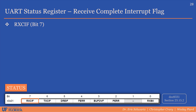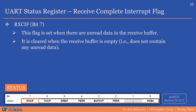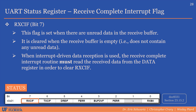Each XMega UART module is capable of generating three different interrupts: one for when the receive buffer has new data to be read, one for when all of the data in the transmit buffer has been sent, and another that indicates data can be written to the data register. Each of these three interrupts has an interrupt flag associated with it. The receive complete interrupt flag is bit 7 of the UART status register — it is set when there are unread data in the receive buffer and cleared when the receive buffer is empty. Immediately after reading the receive buffer, if there is no new data, the receive complete interrupt flag will be cleared.